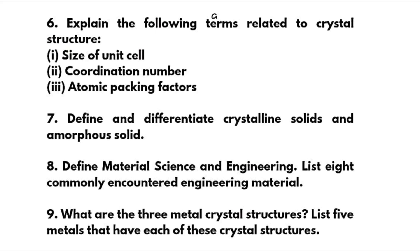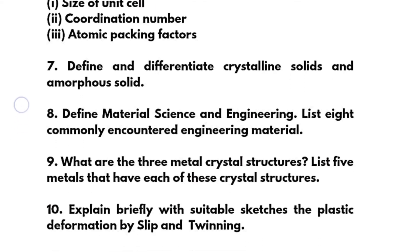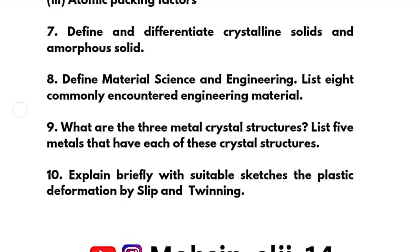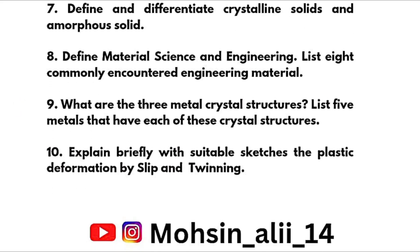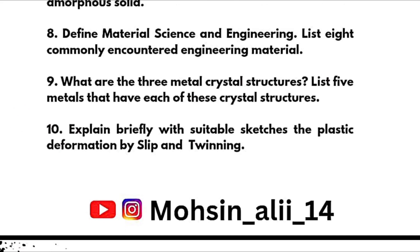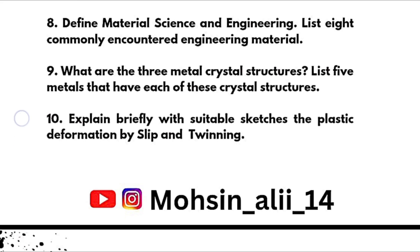Seventh: define and differentiate crystalline solids and amorphous solids. Eighth: define material science and engineering and list eight commonly encountered engineering materials. Ninth: what are the three metal crystal structures; list five metals that have each of these crystal structures. Tenth: explain briefly with suitable sketches the plastic deformation by slip and twinning. This is all about Module 1.